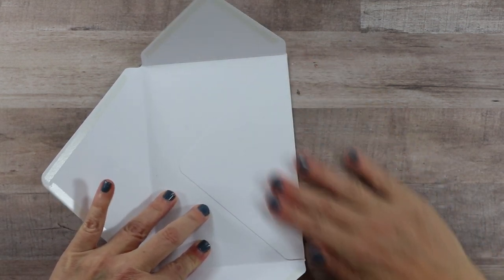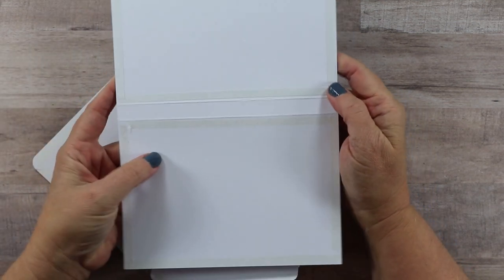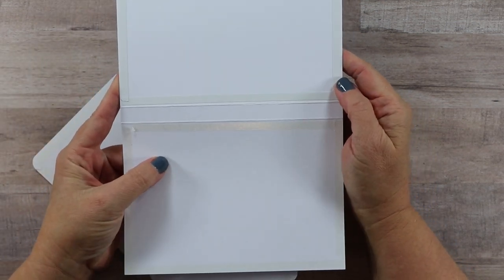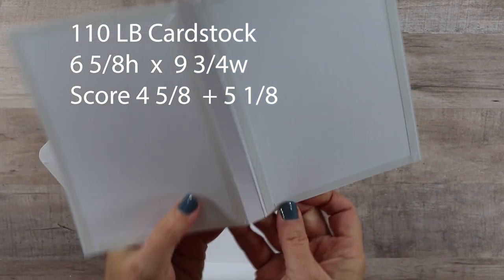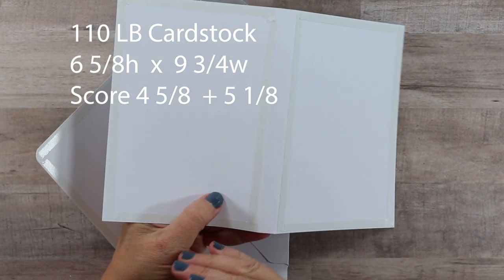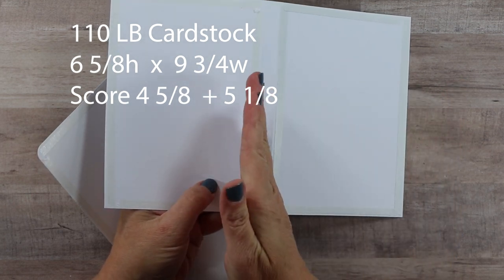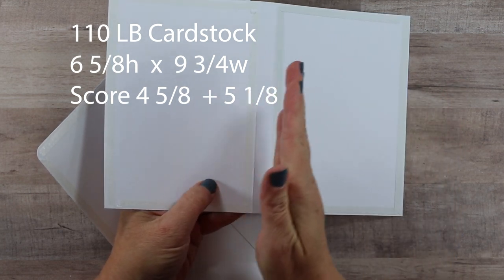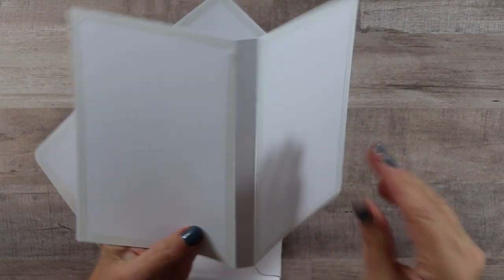Now what we need is something to connect the envelopes. So I'll switch to 110-pound cardstock here, and my piece is cut to be six and five-eighths by nine and three-quarters. It's scored at four and five-eighths and also five and one-eighth, so that's going to give us a half-inch spine.